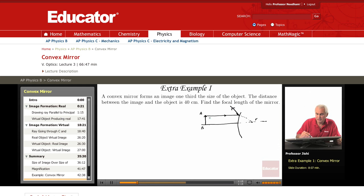You can draw another ray that goes to C, and that reflects on itself, so this is C, and that must reflect on itself.